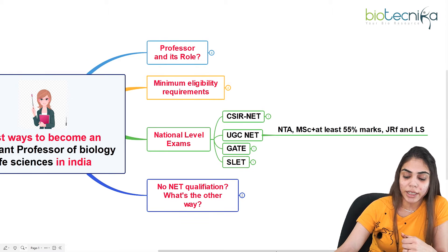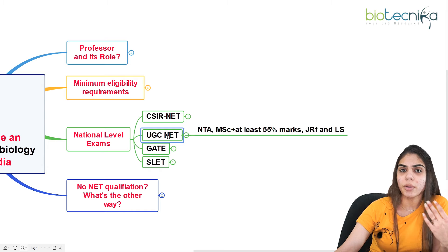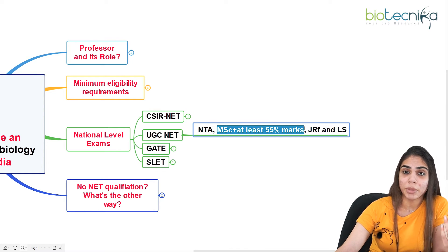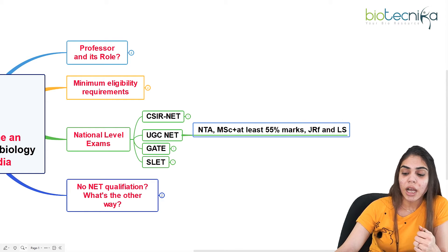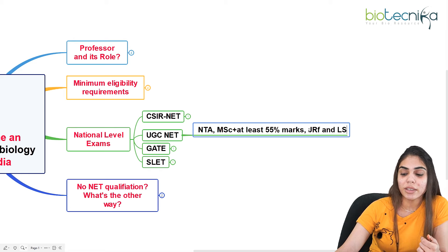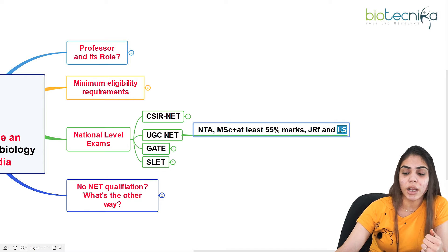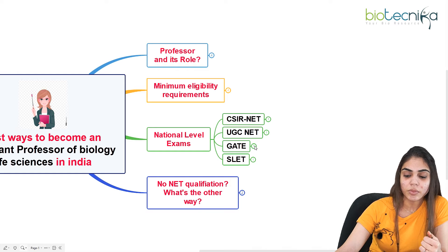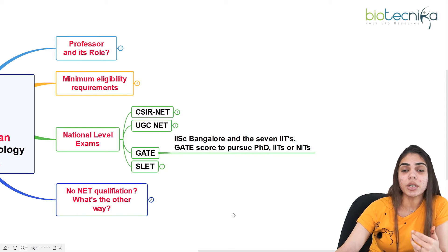The second examination is UGC NET, also conducted by NTA. It covers many different subjects and again requires an MSc with at least 55% marks for general category candidates. This exam also offers JRF as well as NET (lectureship) qualification. Once you qualify, you can apply for professor positions on the basis of that NET certificate.